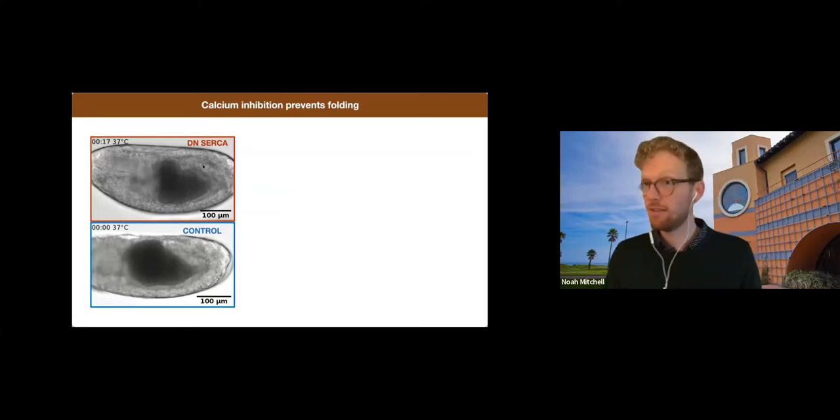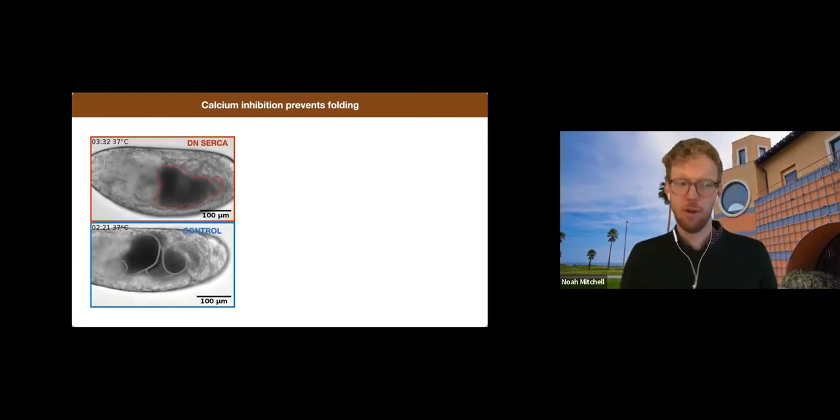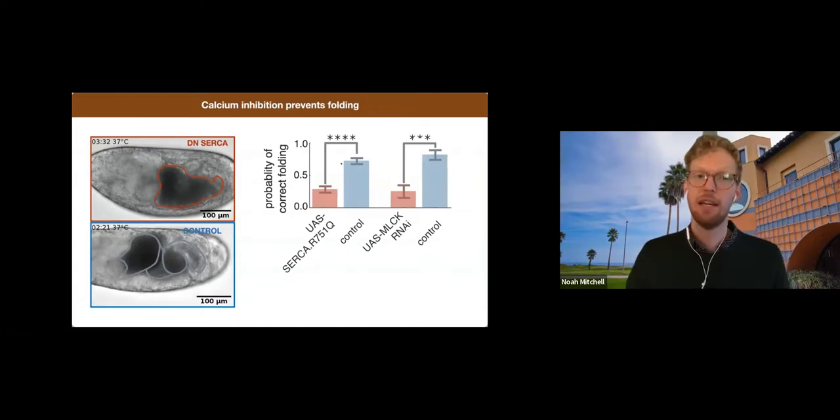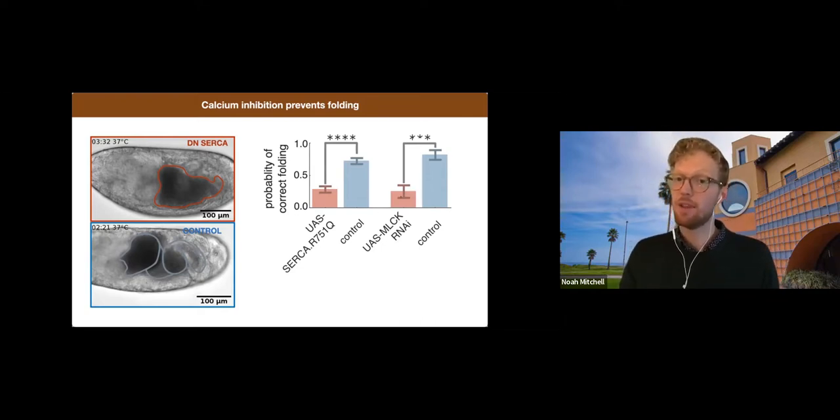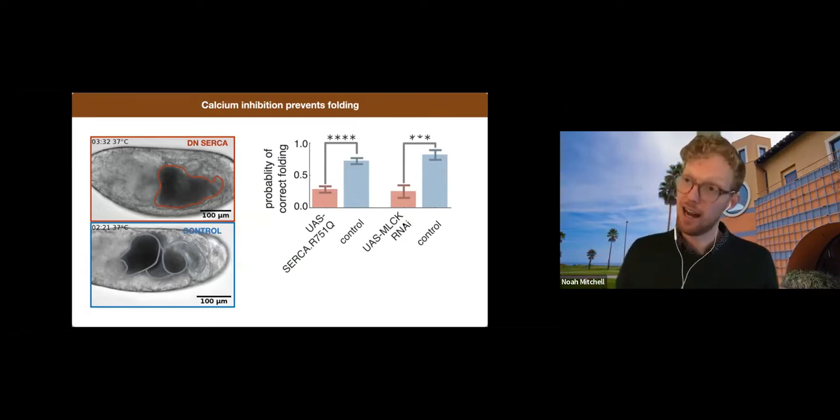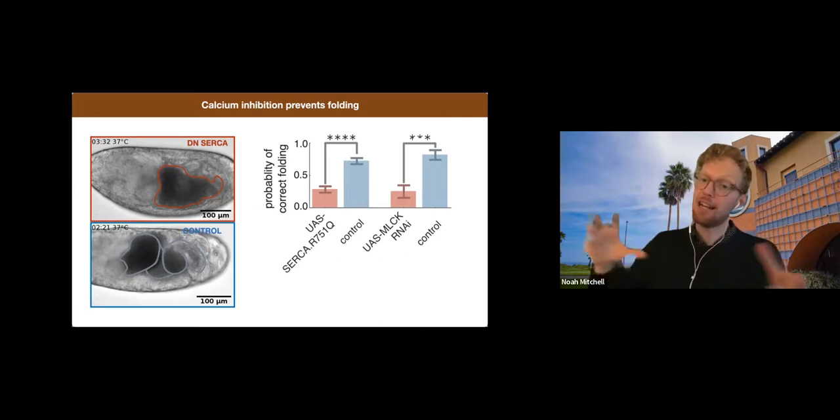In the top, I'm expressing a dominant negative allele for a calcium ATPase that I turn on right before constrictions would appear. And below we have a relevant control embryo. And what we'll find is that this calcium inhibition removes all the folds in the top red embryo, while the control moves along just fine. So we repeated this many times, and saw a clear difference in the ability to form correct folds. And we also repeated this with a different knockdown against a different component of the calcium pathway relating to myosin and actomyosin contractility, the myosin light chain kinase.